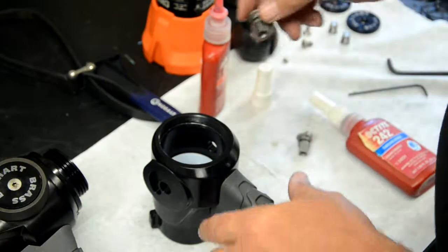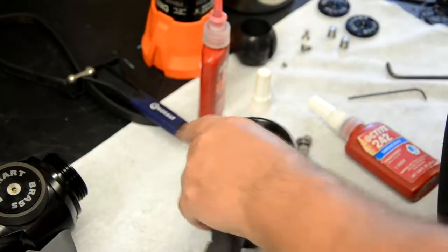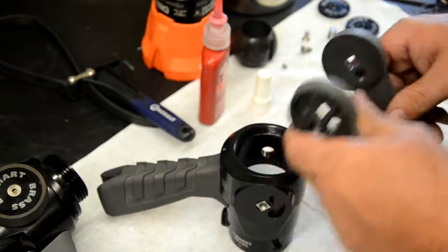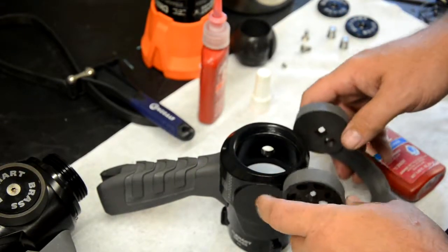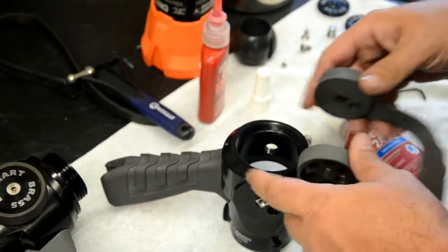We're now going to reinstall the bale handle. Place the bale handle back into the shutoff body in the open or back position at approximately 45 degrees. Note, make sure the word open on the bale handle reads from the discharge side of the shutoff body.